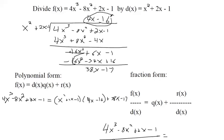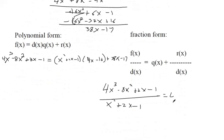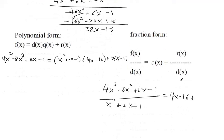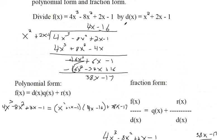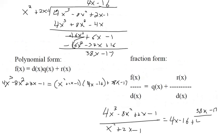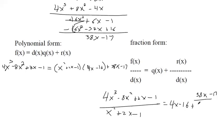Our quotient was 4x minus 16. And then r of x is the remainder, 38x minus 17. And then d of x is the thing that's doing the dividing, so 4x minus 16. Oh, no, sorry. This is doing the dividing. I confused those again. I caught myself this time, though. This is our divisor.